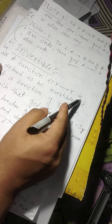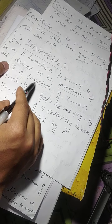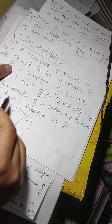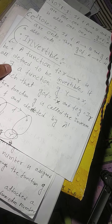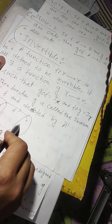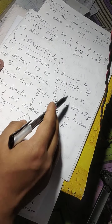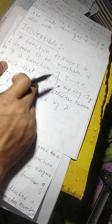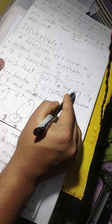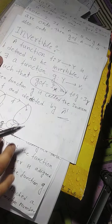Now I am discussing invertible functions. A function f from X to Y is defined to be invertible if there exists a function g from Y to X, where X is the domain set and Y is the codomain set, such that g compose f equals I_X and f compose g equals I_Y. Then the function g is called the inverse of f and is denoted by f inverse.